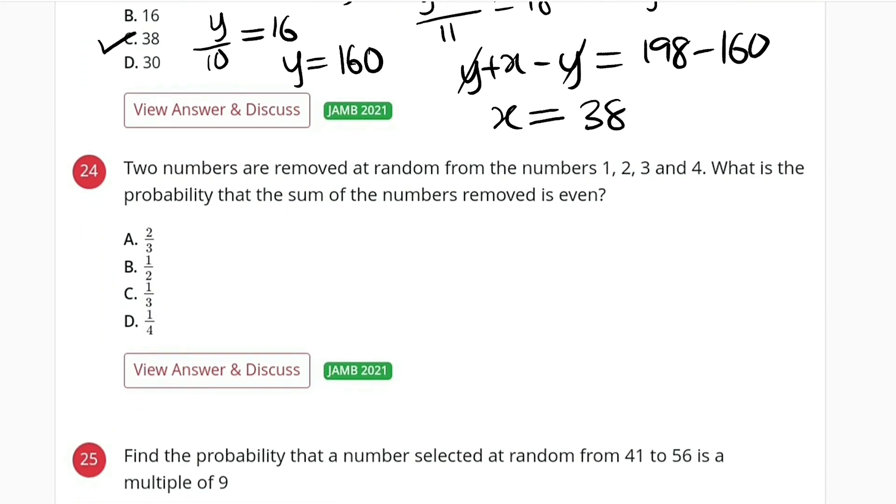Moving on, we have question 24. The question reads: two numbers are removed at random from the numbers 1, 2, 3, and 4. What is the probability that the sum of the numbers removed is even?